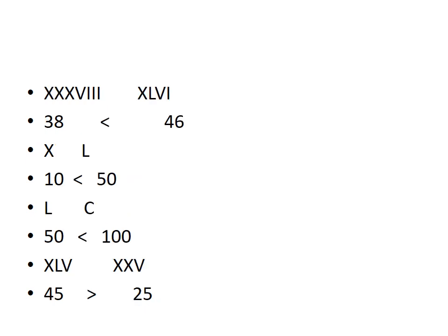Now see the next example: XXXV and III. X, X, X means 30, plus 5 = 35, plus 3 = 38. Other side: X, X, L, V, I. X, X means 20. L means 50 minus 10 = 40, plus 5 = 45, plus 1 = 46. Which number is greater? 46 is greater. That's why the crocodile mouth will move towards 46.